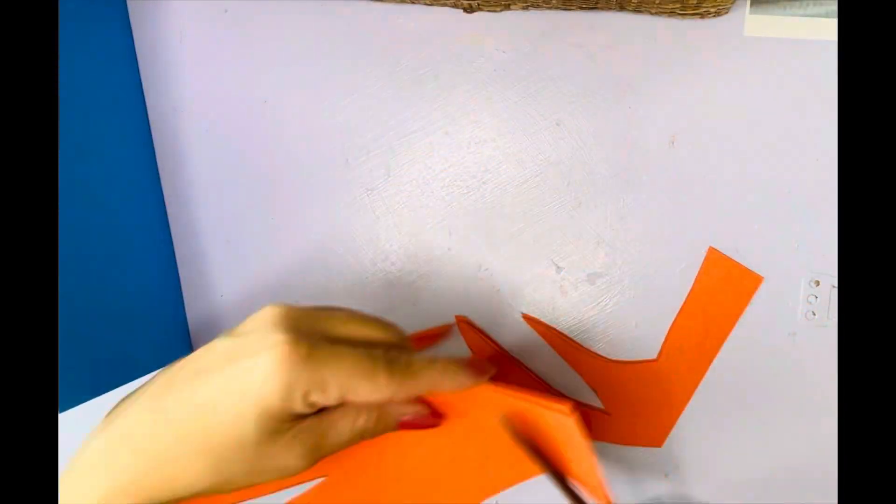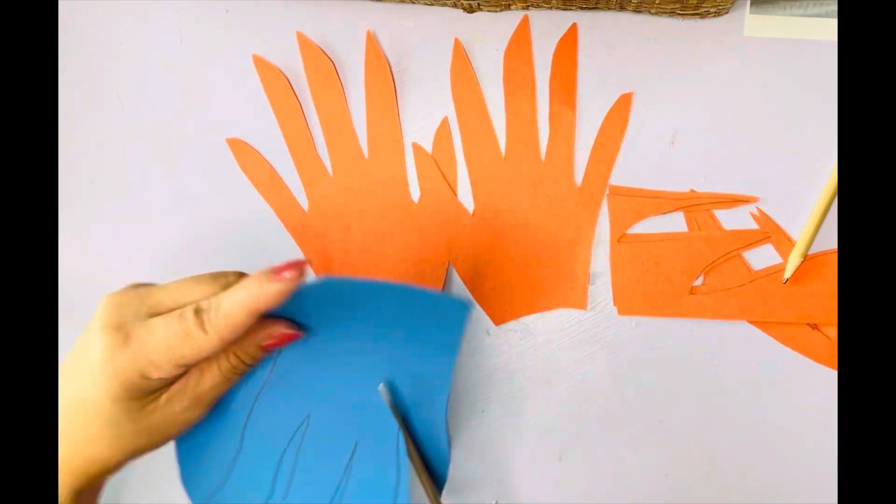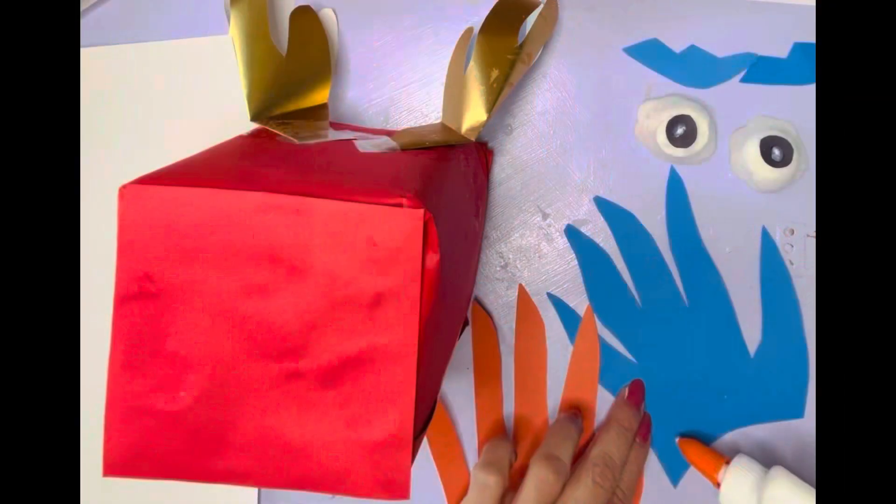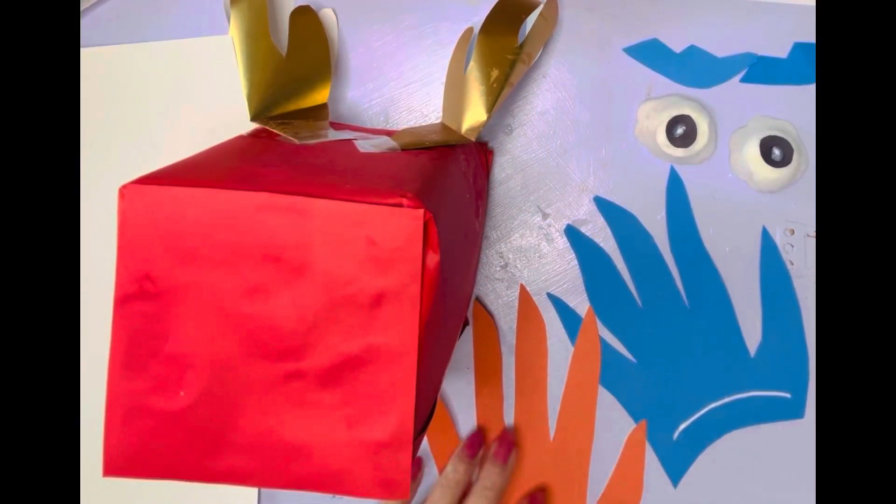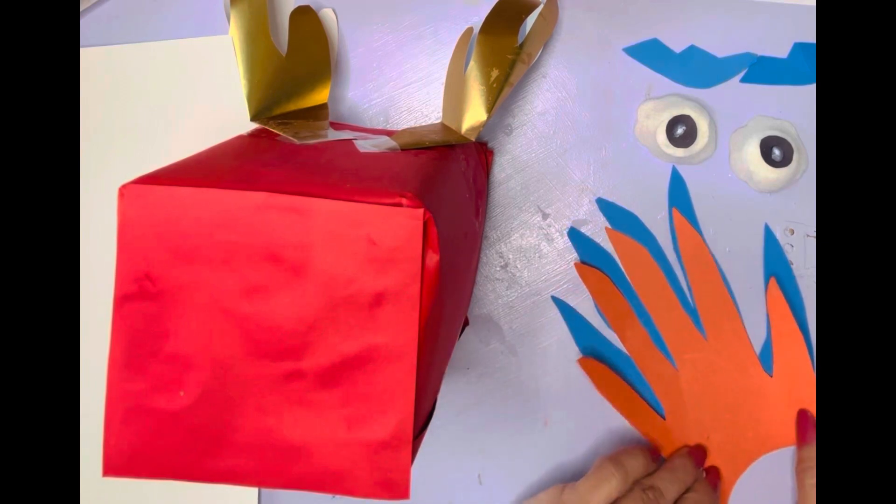Now I'm going to trace and cut out my hands in orange and blue to make some flames for the side of the head. I'm just going to glue those together and then put them on the side of the head.